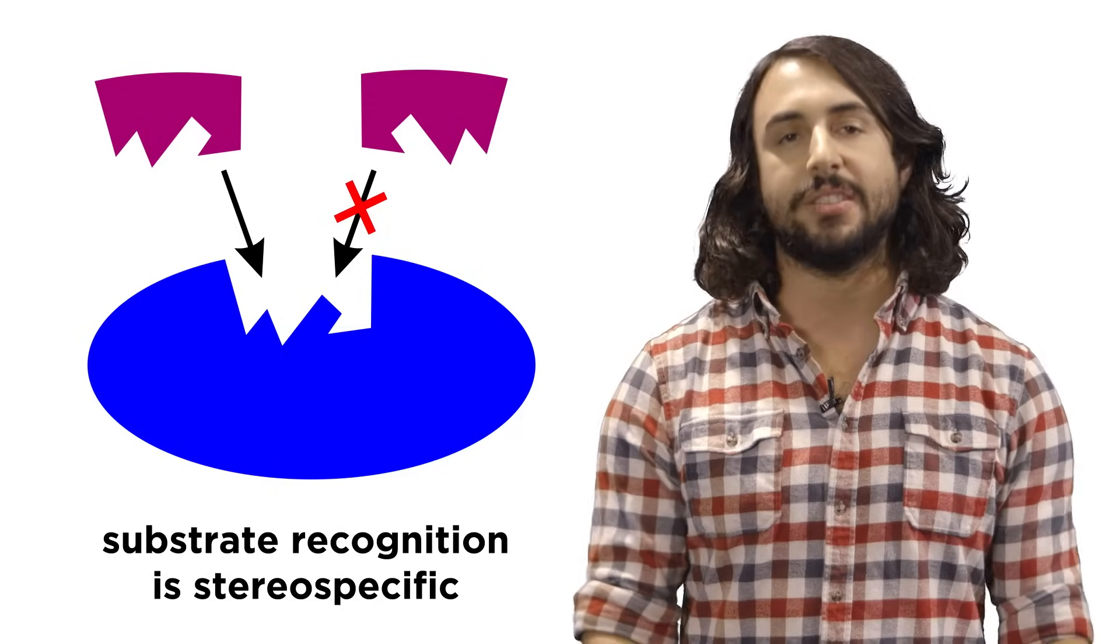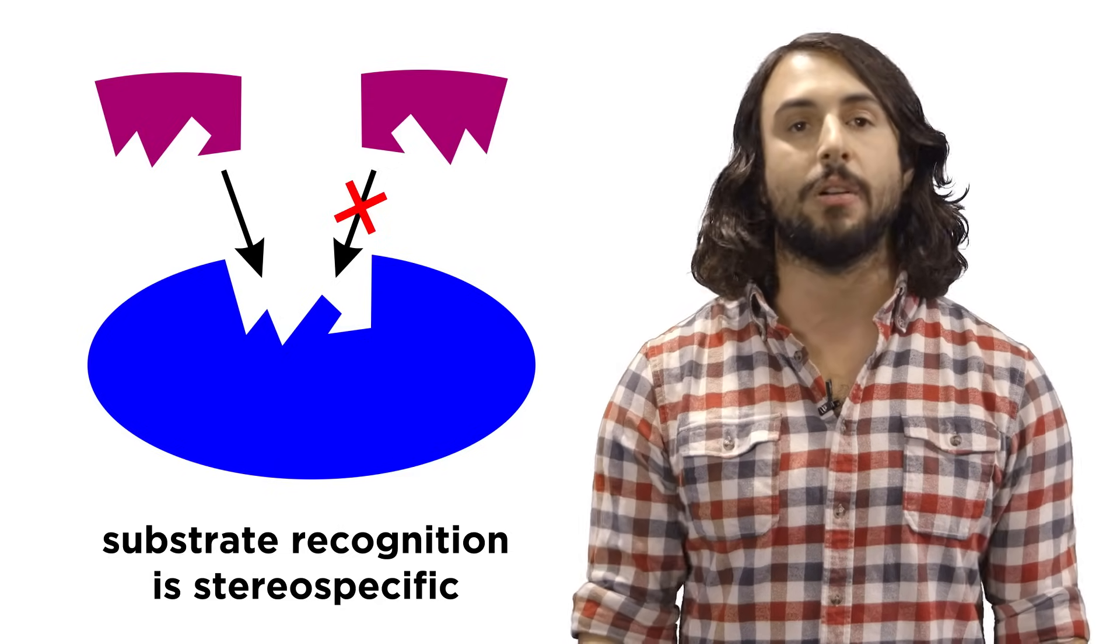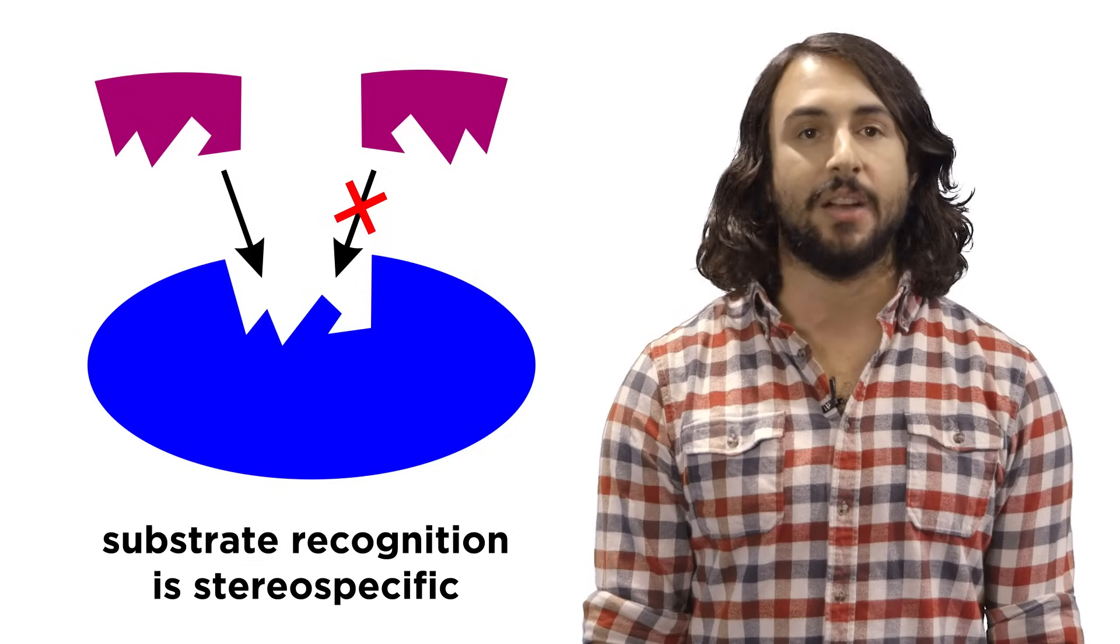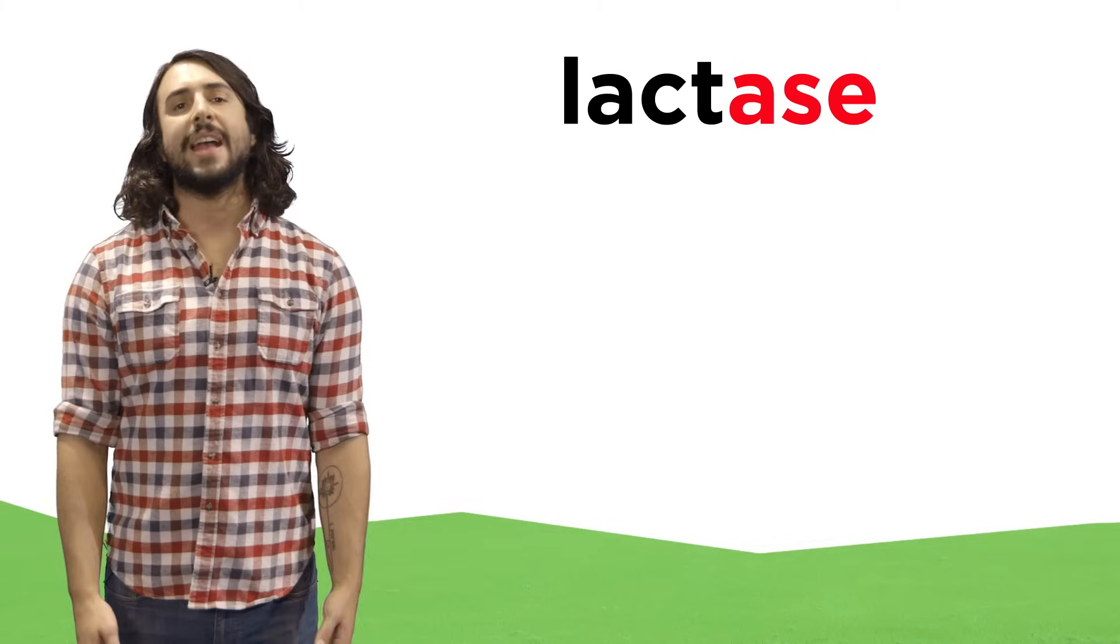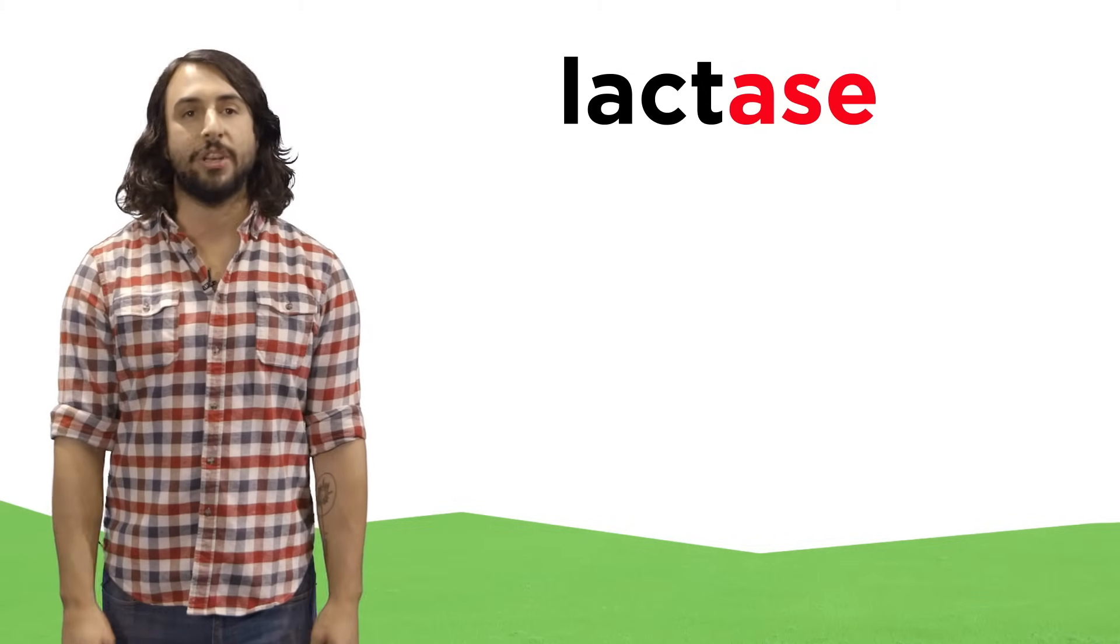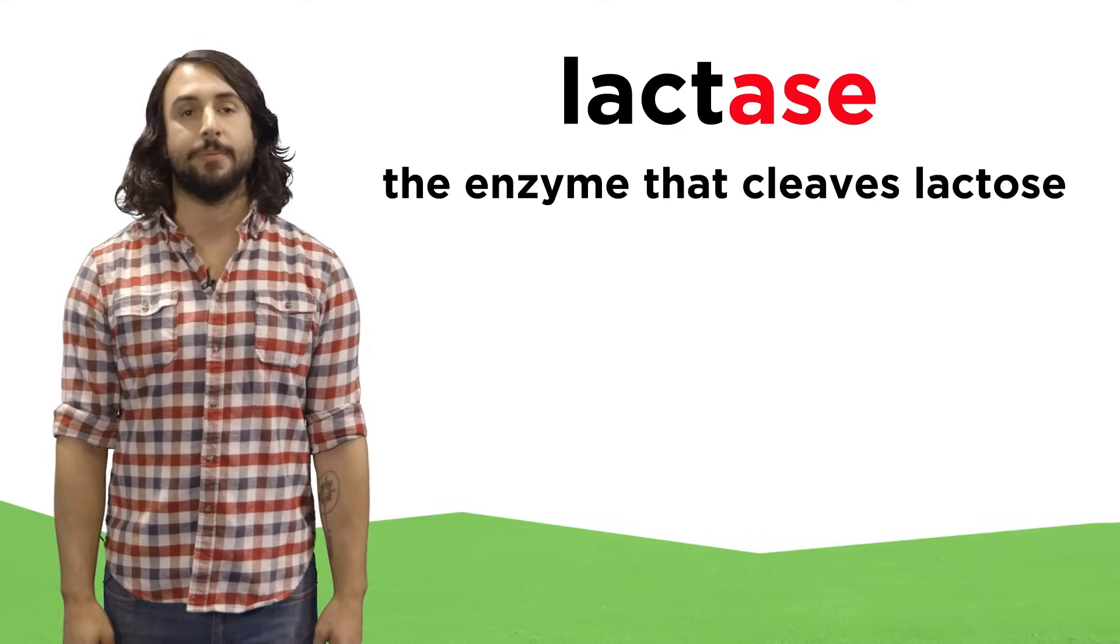Enzymatic activity is always stereospecific, meaning that if a substrate can exist as two mirror images, only one of those forms will fit into the active site of the enzyme. Most enzymes have names that end in ase, so you'll know an enzyme when you hear one. The rest of the name usually has to do with what the enzyme operates on.